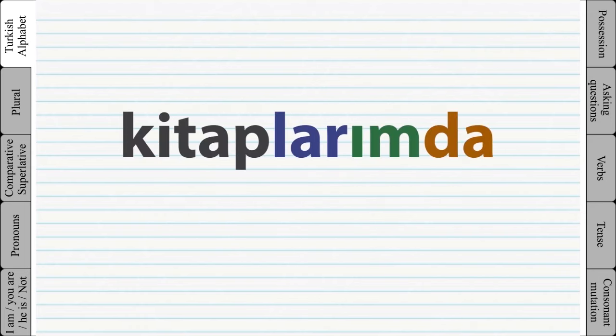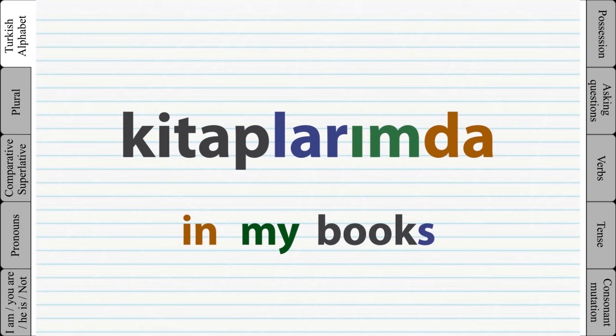For example, 'kitablarımda' means 'in my books'. As you can see, in English three separate words are used, while in Turkish they are all glued to each other.